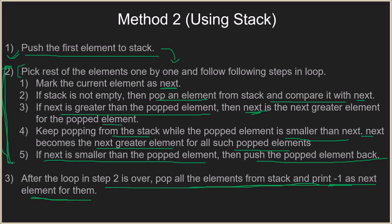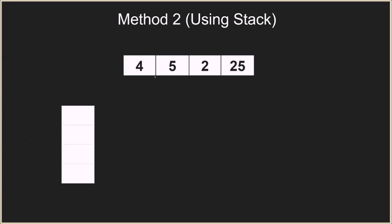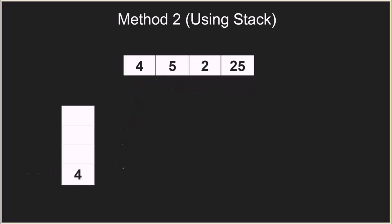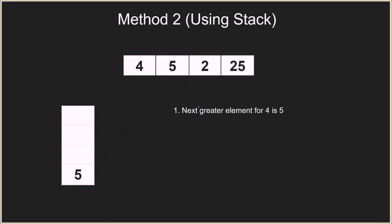This algorithm becomes clearer with an example. We have the array [4, 5, 2, 25] and a stack. First, we push 4 onto the stack. Then next is 5, the current element being processed. We pop 4 from the stack and compare with 5. Because 5 is greater than 4, we print that 5 is the next greater element for 4, then push 5 back onto the stack.